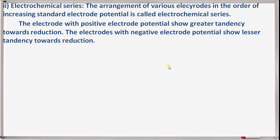Second short note: electrochemical series. The arrangement of various electrodes in the order of increasing standard electrode potential is called the electrochemical series. Electrodes with positive electrode potential show greater tendency towards reduction. Electrodes with negative electrode potential show lesser tendency towards reduction.